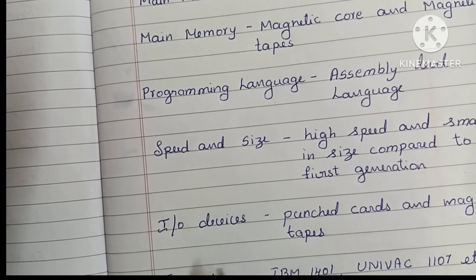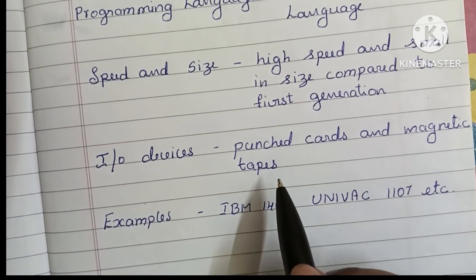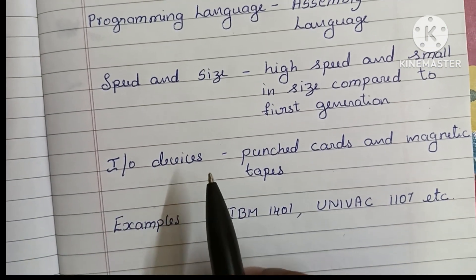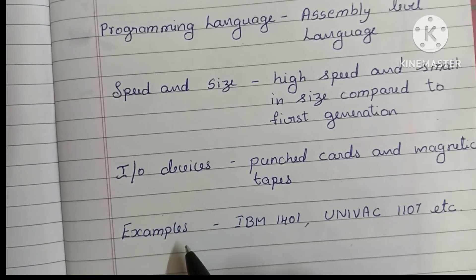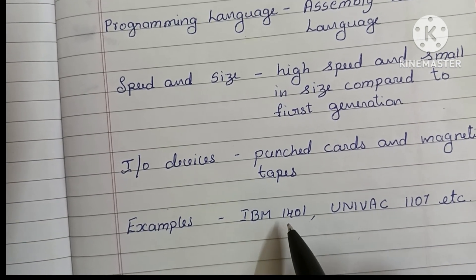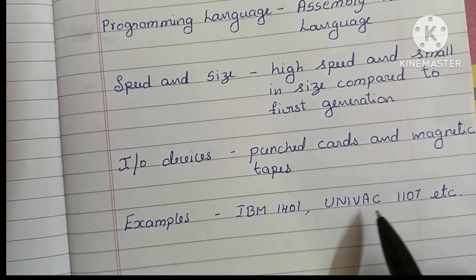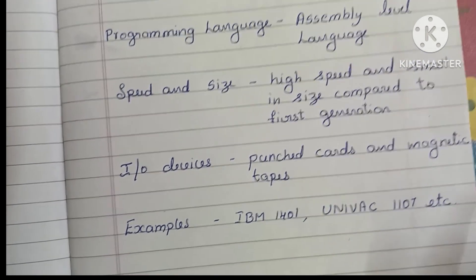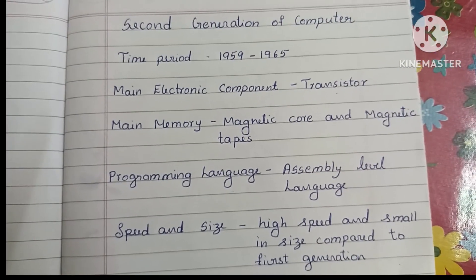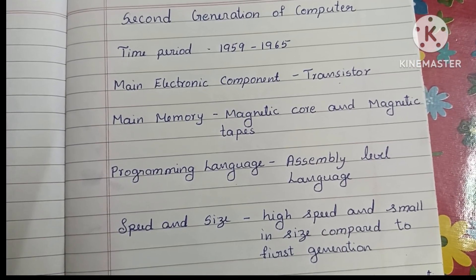Input and output devices are punched cards and magnetic tapes. Examples of second generation computers are IBM 1401 and UNIVAC 1107. These are the characteristics of the second generation of computers. Thank you for watching.